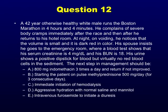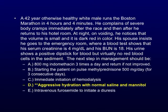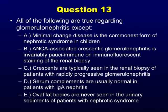Question 12. A 42-year-old healthy male runs the Boston Marathon in 4 hours and 4 minutes. He complains of severe body cramps after the race. That night, he notices small urine volume and dark red-colored urine. His spouse brings him to the ER where creatinine is 4, BUN 18. Urine is dipstick positive for blood but there are no red blood cells in the sediment. The next step in management is aggressive hydration with normal saline and mannitol — 93% got it right.